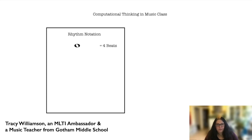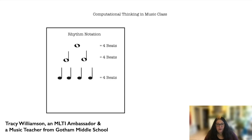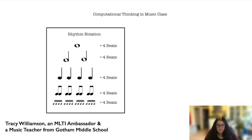For instance, a whole note lasts for four beats. If you take that symbol and add a stem to it, the duration is cut in half and the note lasts for only two beats. So two half notes equals the same duration as one whole note. We keep progressing through quarter notes, eighth notes, sixteenth notes, 32nd notes, and so forth. When students are playing or composing music, they need to make sure there are the correct notes to equal the number of beats that the music needs. Students need to figure out how to fit them together like a puzzle.